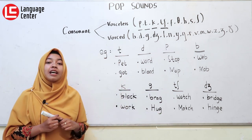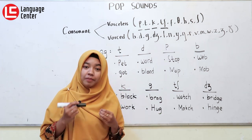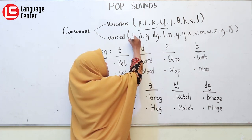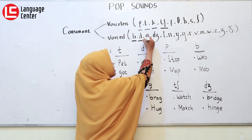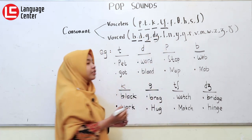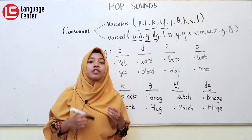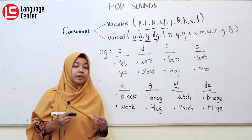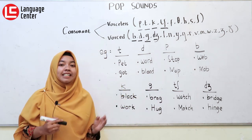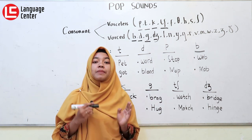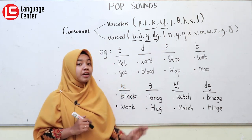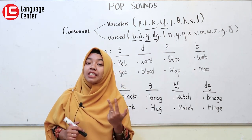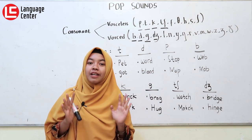Next, di dalam suara voiced, ada suara apa saja yang bisa kita berikan pop sound? Ada B, kemudian D, G, dan juga J. Jangan lupa bahwa J ini dibaca dengan suara 'jeh' — in English it's like 'jeh'. Jadi suara-suara yang bisa kita berikan pop sound ada delapan: P, T, K, CH, dan juga B, D, G, J. Ada delapan suara pop sound.